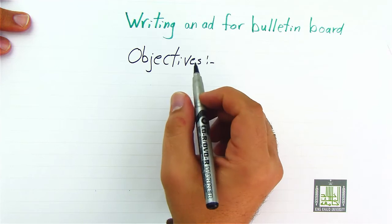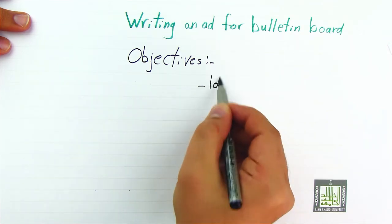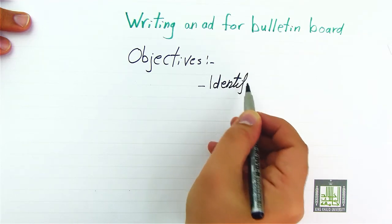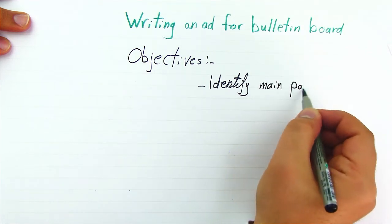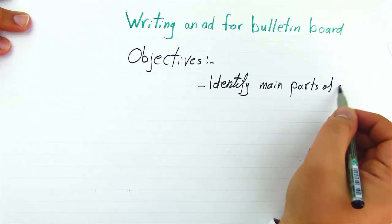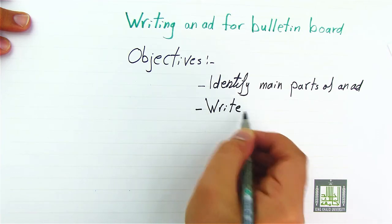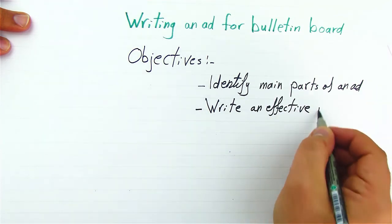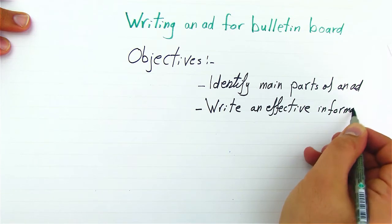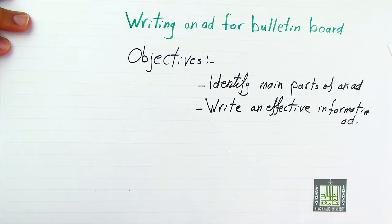Let's talk about the objectives that we're going to achieve by the end of this lesson. Students, by the end of this lesson, will be able to identify the main parts of an ad. Second, students will be able to write an effective, informative ad.